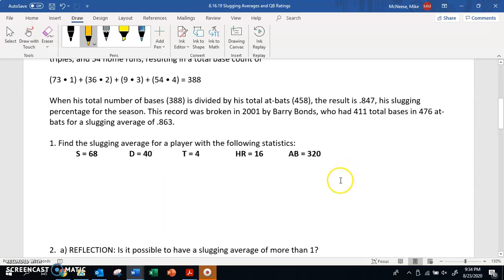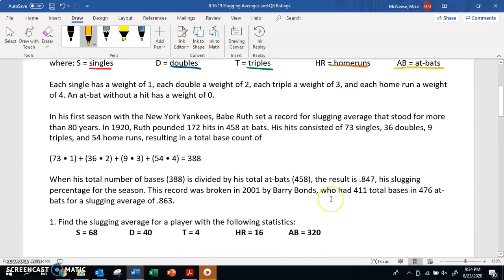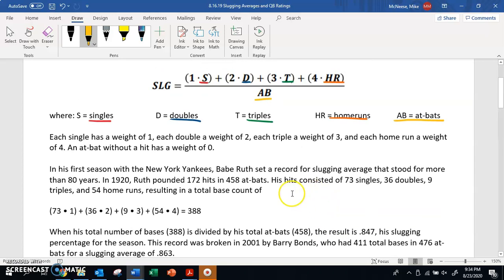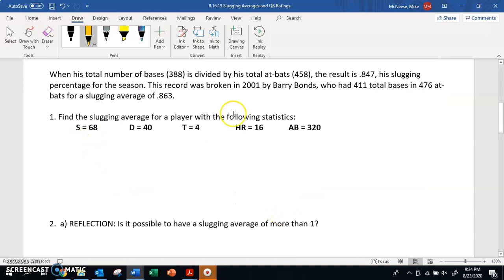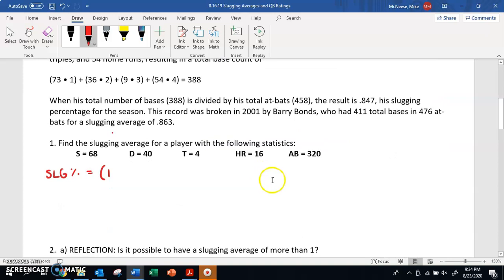Now we want to find the slugging average for a player with the following statistics: S=68, D=40, T=4, HR=16, AB=320. All I'm going to do is plug all of these values into the format. Slugging percentage equals, we've got our singles - remember, singles is 1 times our singles, 2 times our doubles, 3 times our triples, 4 times our home runs.